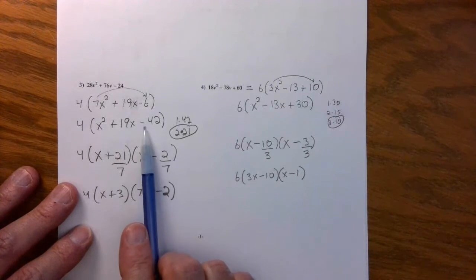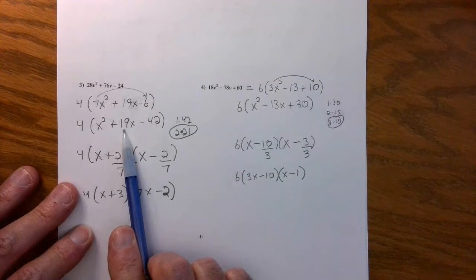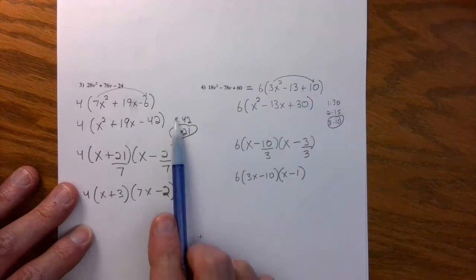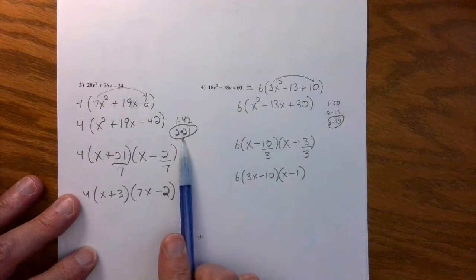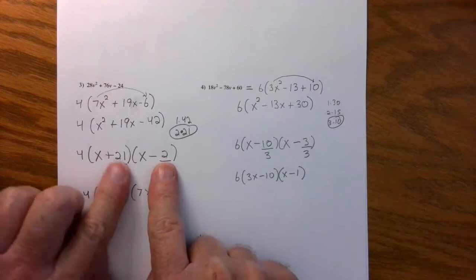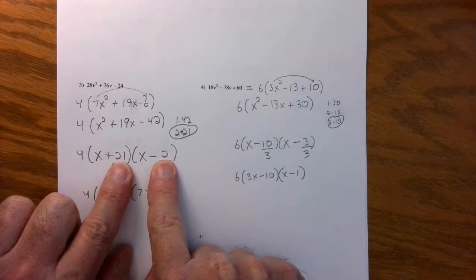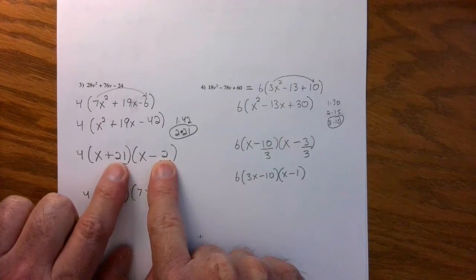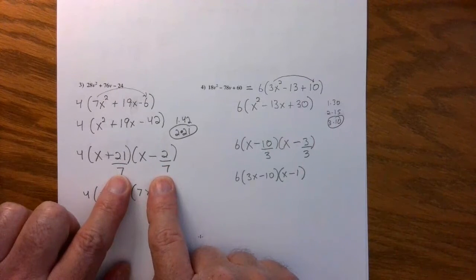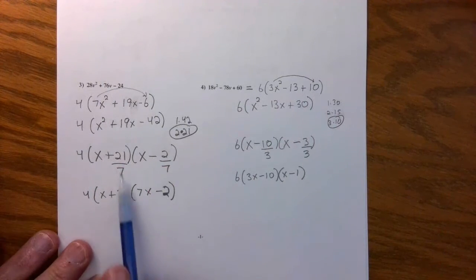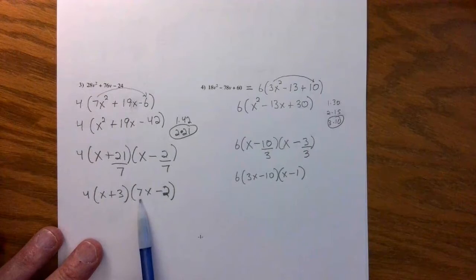You factor the forty-two, looking for two numbers. The difference between them, or when you subtract them, you get nineteen. So I started doing it, and I found right away, two and twenty-one. So I put two and twenty-one in here. Here's our answer. Remember, the signs are different, and the twenty-one has to go with the plus. Then I divide the slide, which was seven, and I simplified this one to get three. And I bottomed up that seven in front right there.